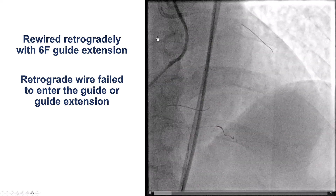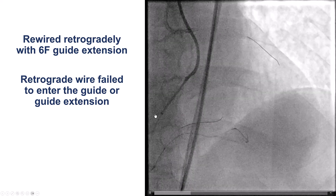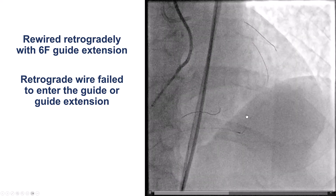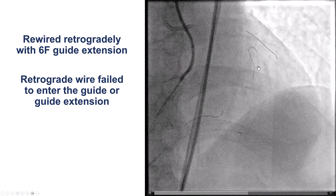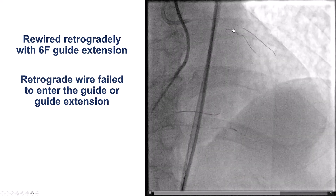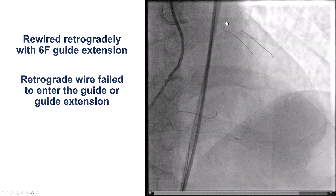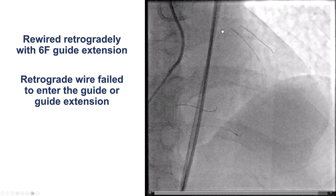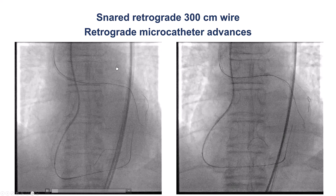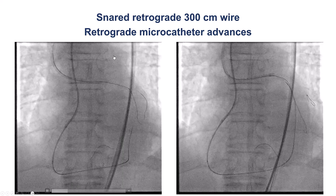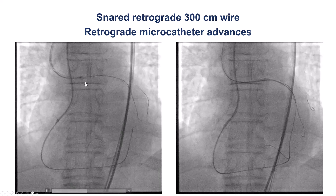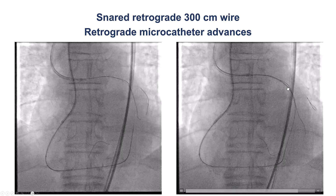We repeated the process. This time we used a retrograde guide extension into the right coronary artery, and again a retrograde guide wire crossed. But we had difficulties with the retrograde wire crossing the CTO — unlike the first time where it flew through, the second time the wire was knuckling and not really crossing into the proximal LAD. We changed guide wires, tried Gladius Mongo and Caravel, and eventually a 300 cm Caravel retrograde wire was advanced into the antegrade guide catheter using a guide extension.